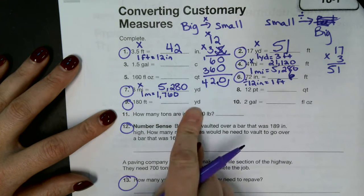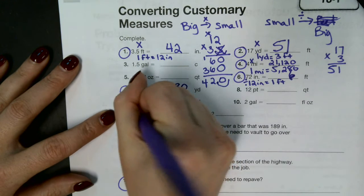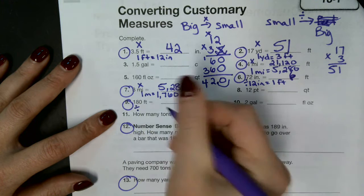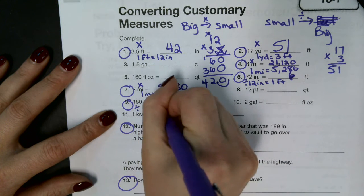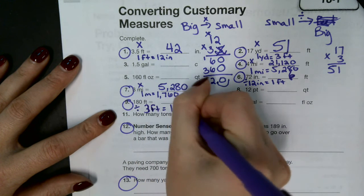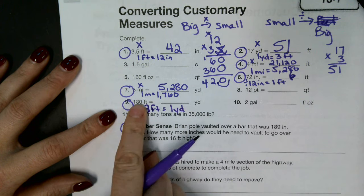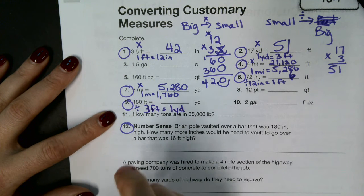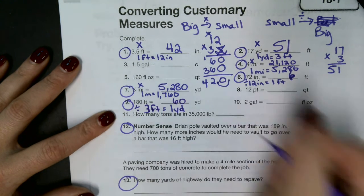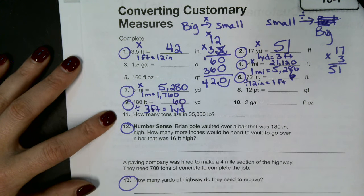So you're saying feet smaller than yards. So we're going to divide. And we know that three feet are in one yard. Correct? So 180 divided by three is what? 60. 60 what? Yards.